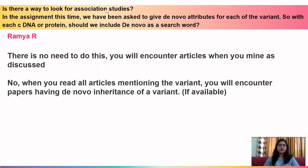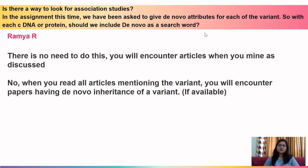The next question is by Ramya. Is there a way to look for association studies specifically? Also, should 'de novo' be included as a search word? For the first question: you do not need to search particularly for association studies — if you read all articles for the variant, you will encounter any association studies that exist. For the second question: do not include 'de novo' as a keyword. If such publications exist, they will come up during the general article search.